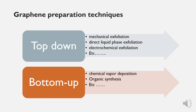Graphene preparation techniques: There are several graphene preparation techniques that can be classified into two categories — top-down and bottom-up. In the top-down approach, one mainly uses graphite as a raw material and applies exfoliation to reduce the van der Waals interaction between the graphene layers, such as mechanical exfoliation, direct liquid phase exfoliation, and electrochemical exfoliation.